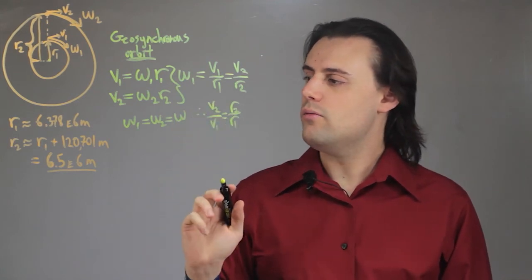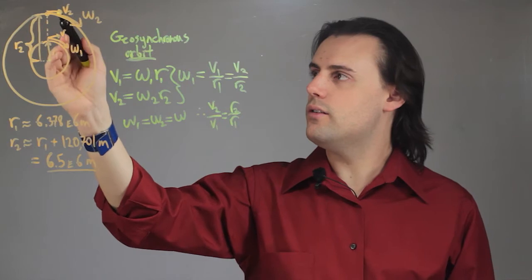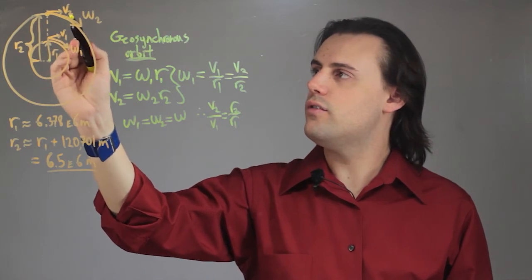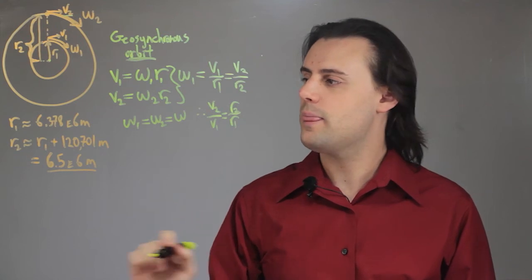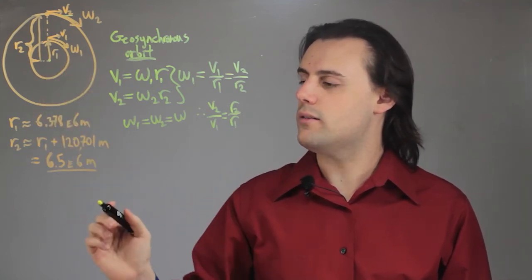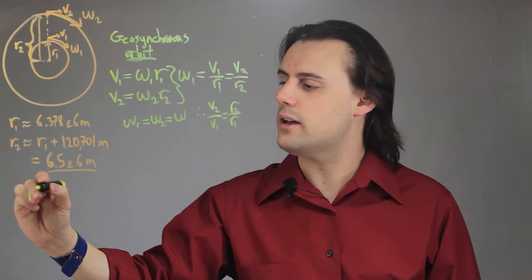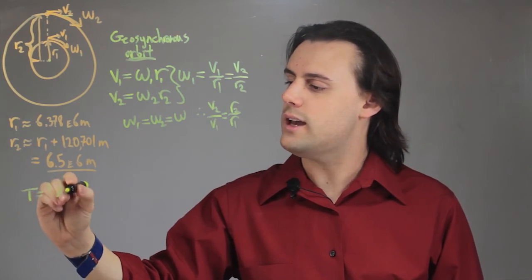We can calculate what the linear velocity of this satellite in the geosynchronous orbit is by considering the rotational rate of the Earth. We know that the period is equal to 1 day,